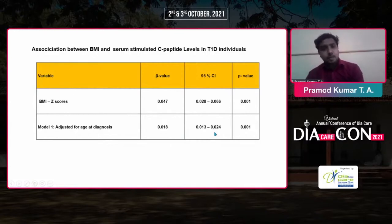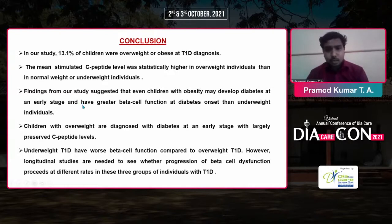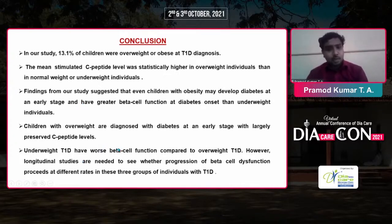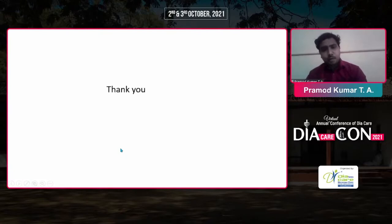In conclusion, 13.1 percent of children were overweight or obese at type 1 diabetes diagnosis. Mean stimulated C-peptide levels were statistically higher in overweight individuals than in normal weight or underweight individuals. Our findings suggest that children with obesity may develop diabetes at an early age but have greater beta cell function at onset than underweight individuals. Children who are overweight are diagnosed at an earlier stage with largely preserved C-peptide levels, while underweight individuals have worse beta cell function. Longitudinal studies are needed to assess whether beta cell function declines at different rates across these three groups.